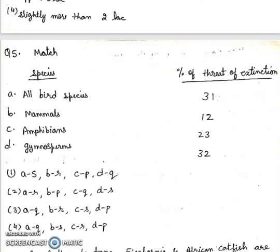Question 5: Match species with percentage of threat of extinction. All bird species, mammals, amphibians, and gymnosperms.